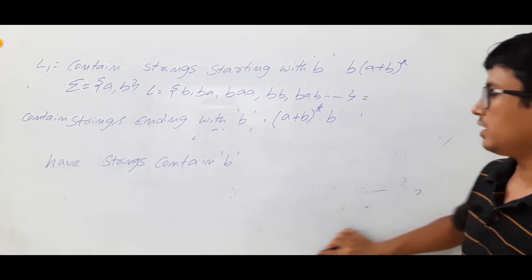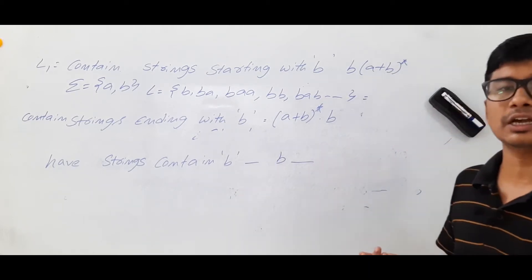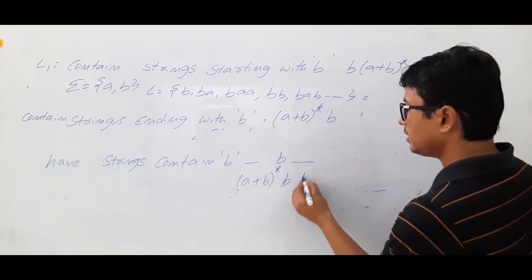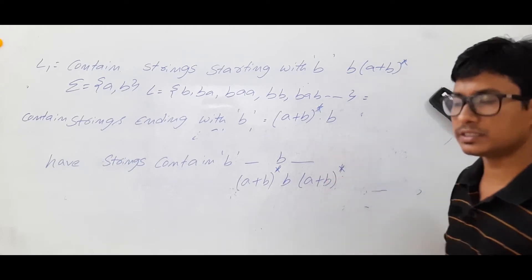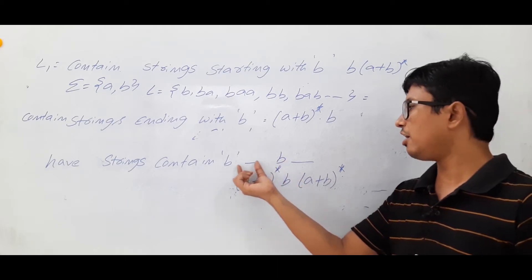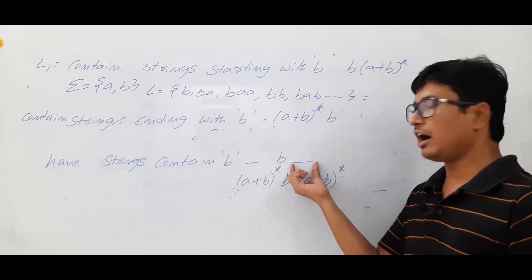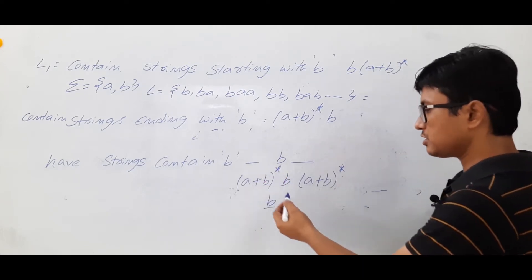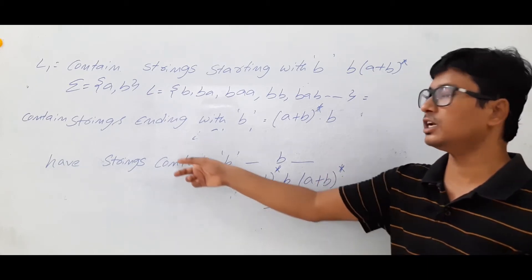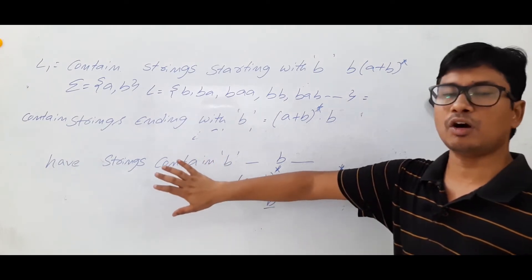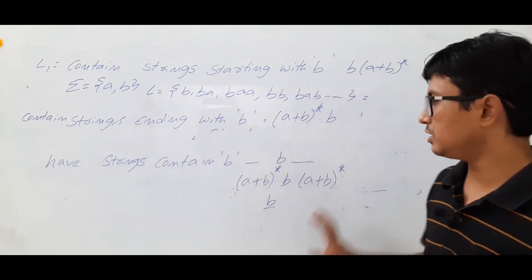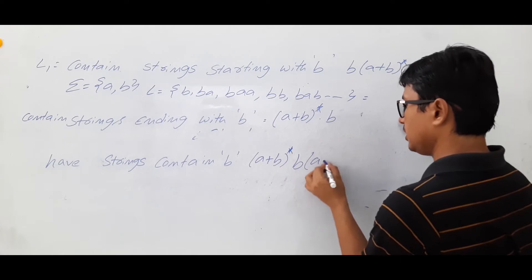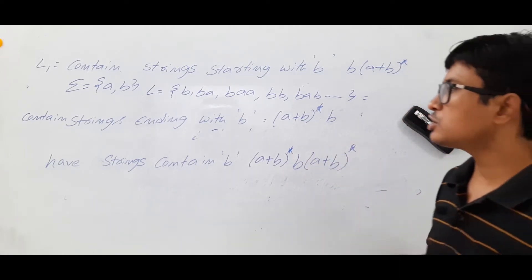Now strings containing B: B must appear somewhere; before and after it, anything can come. So I write (A∪B)*B(A∪B)*. If I set both closures to zero, I get a single B, which contains B. Before the B any combination of A and B can appear, and after it as well. So the regular expression for strings containing B is (A∪B)*B(A∪B)*.